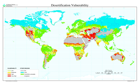Drylands occupy approximately 40–41% of Earth's land area and are home to more than 2 billion people. It has been estimated that some 10–20% of drylands are already degraded, the total area affected by desertification being between 6 and 12 million square kilometers, and that about 1–6% of the inhabitants of drylands live in desertified areas, with a billion people under threat from further desertification. As of 1998, the degree of southward expansion of the Sahara was not well known.